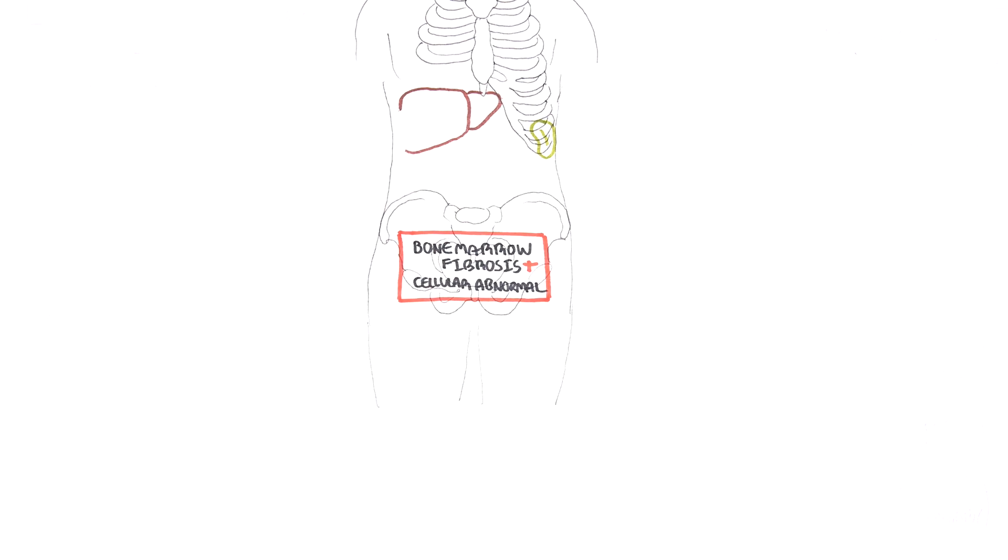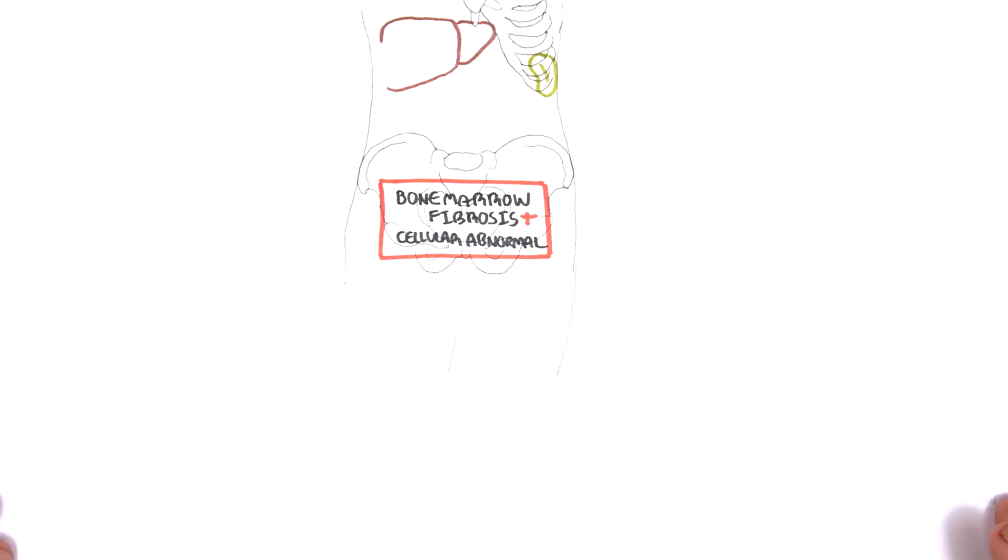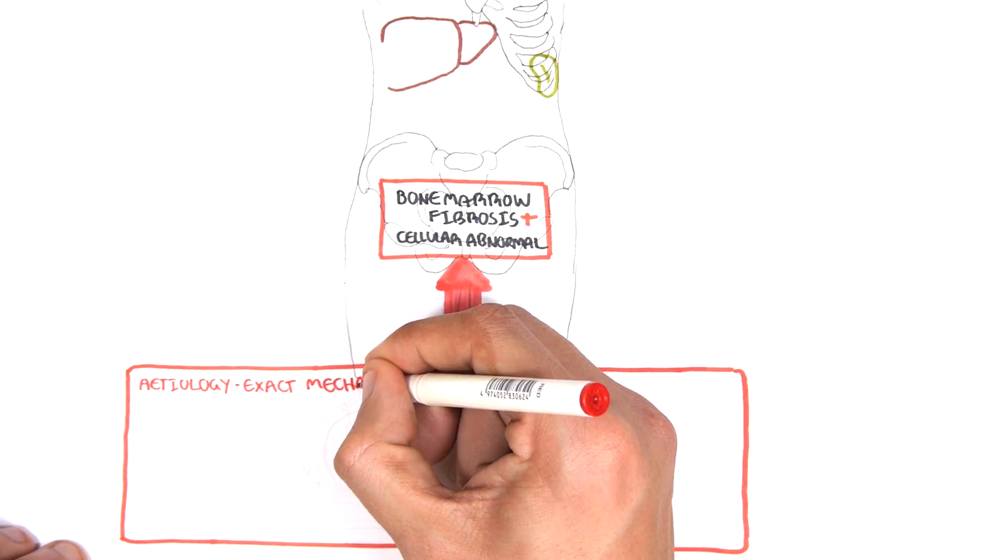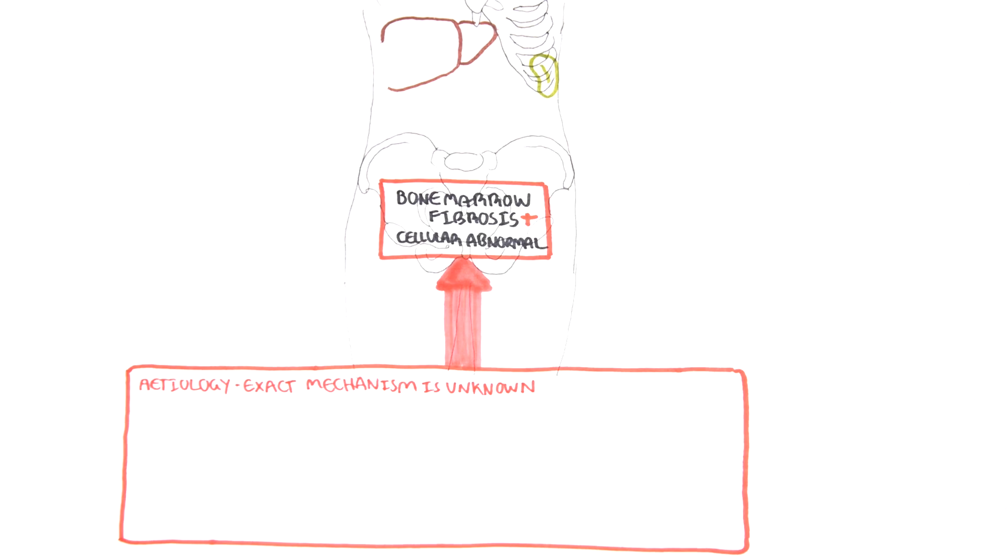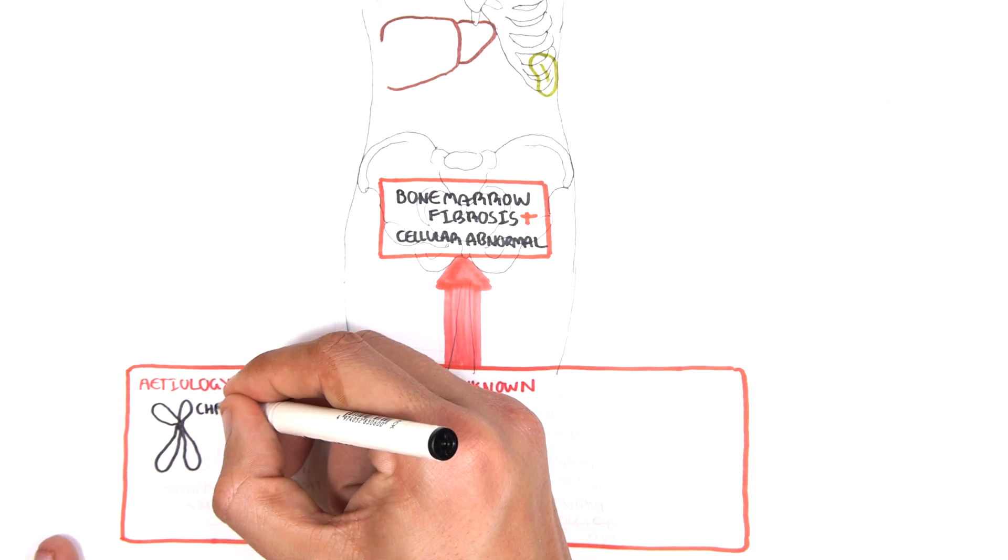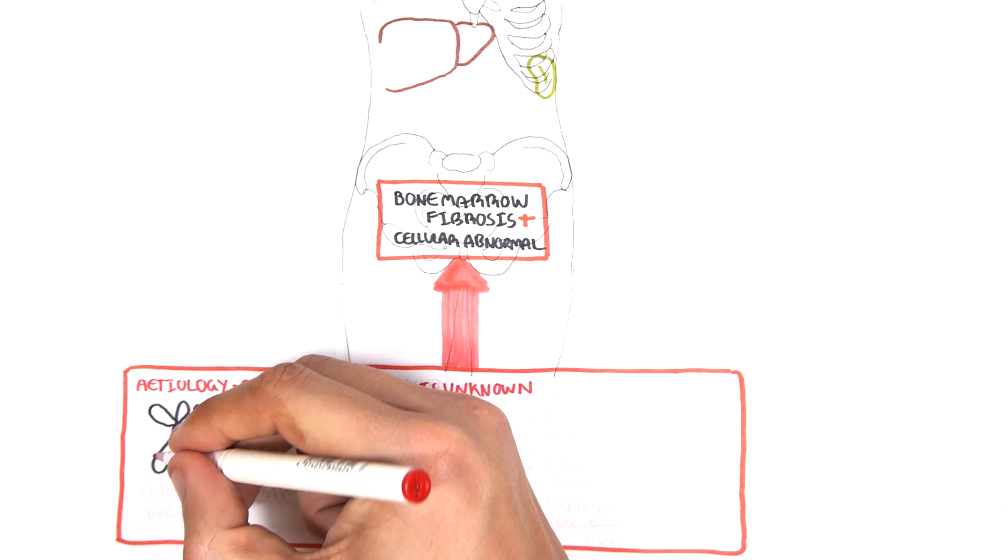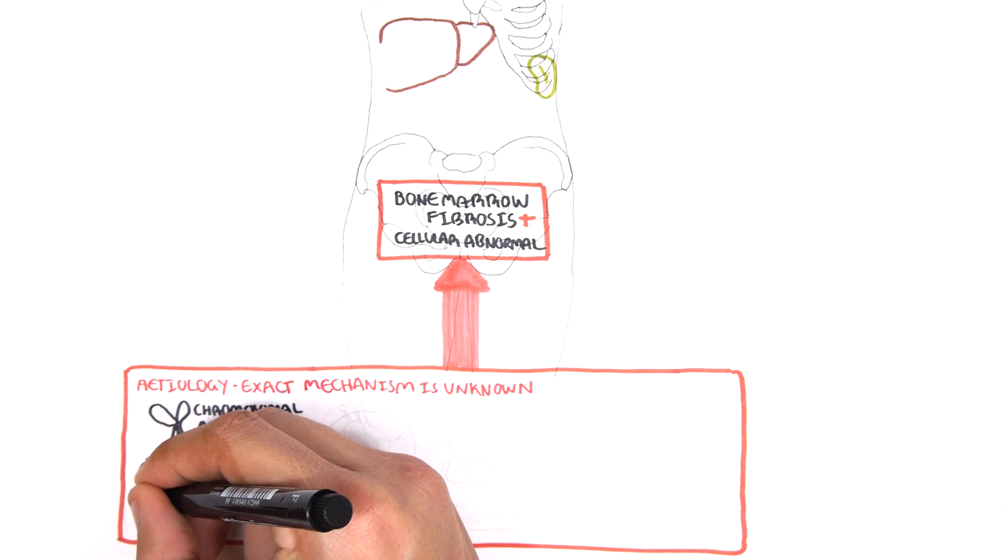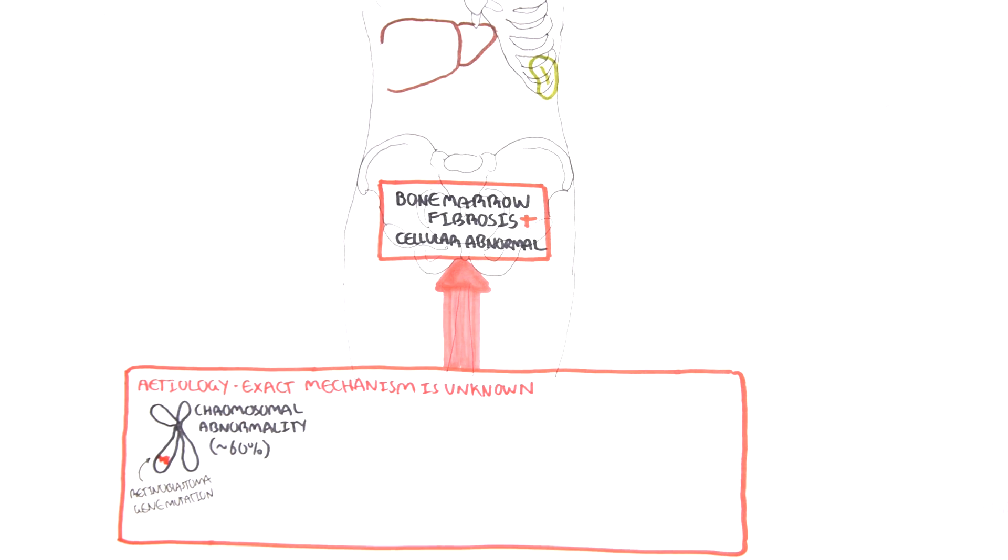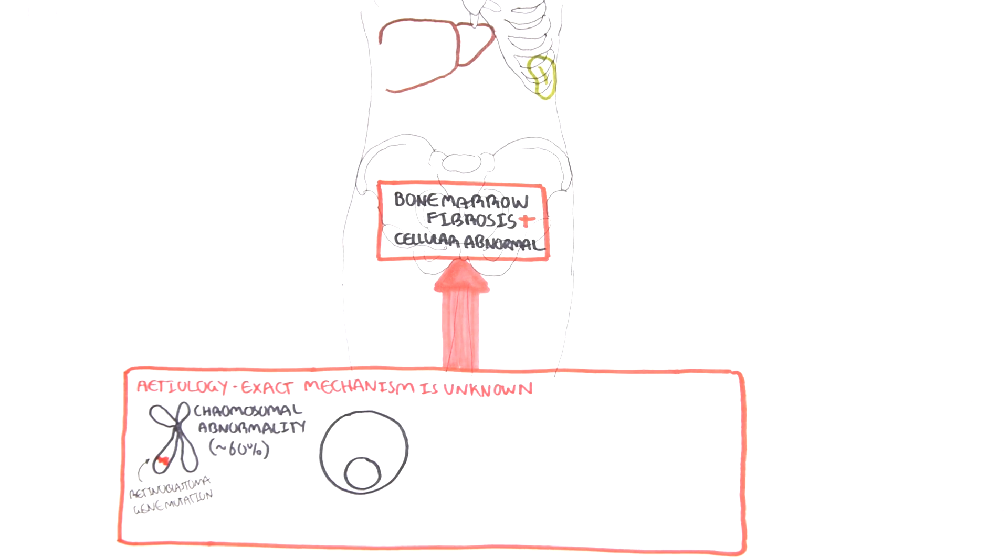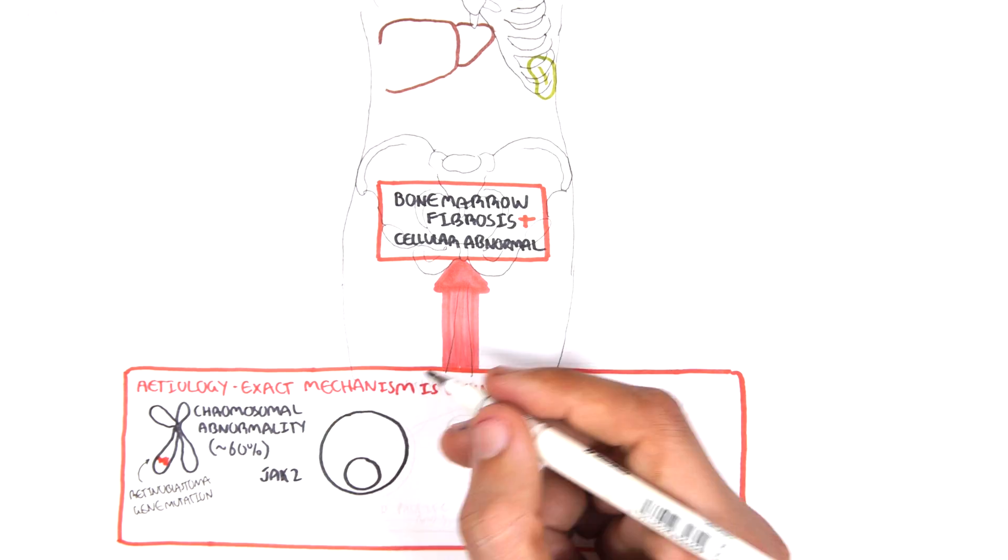The etiology or cause of these changes is not exactly known, but however, there are several factors that have been identified. For example, there are chromosomal abnormalities that are found in up to 60% of cases. A common example is a mutation of the retinoblastoma gene. Another common finding is a JAK2 mutation, with or without the STAT mutation.